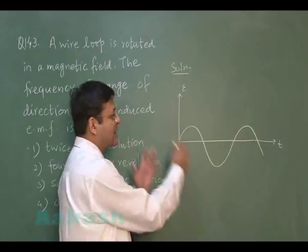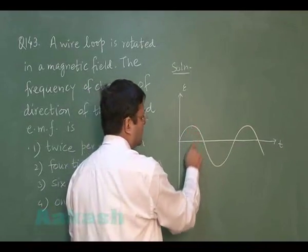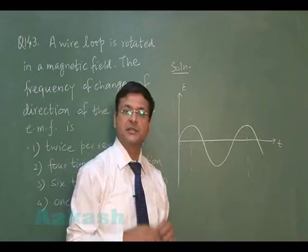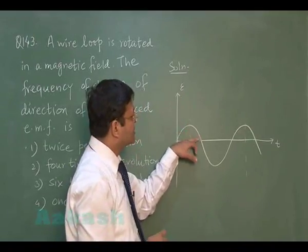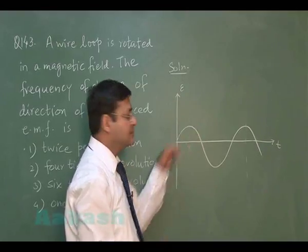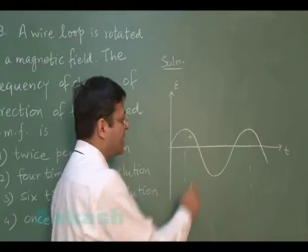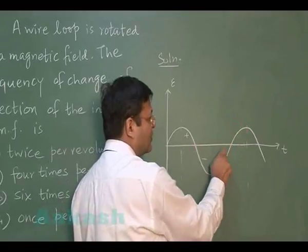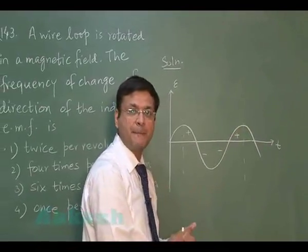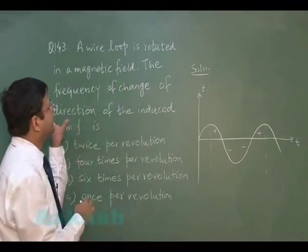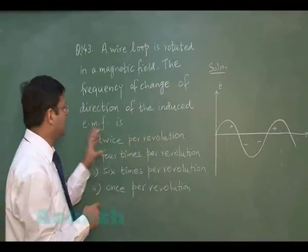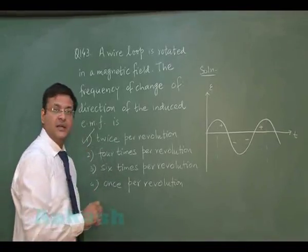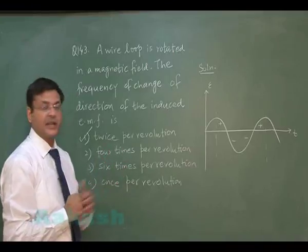One cycle can be counted from anywhere. Over one complete cycle, for the first half the EMF has one direction — call it positive — and for the lower half it is negative. So it changes direction once going from plus to minus, and once more going from minus to plus. The frequency of change of direction of the induced EMF is twice per revolution.